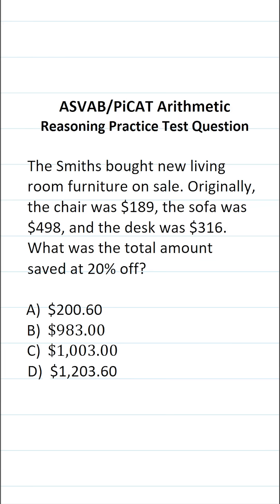This arithmetic reasoning practice test question for the ASVAB and PICAT says the Smiths bought new living room furniture on sale. Originally, the chair was $189, the sofa was $498, and the desk was $316. What was the total amount saved at 20% off?